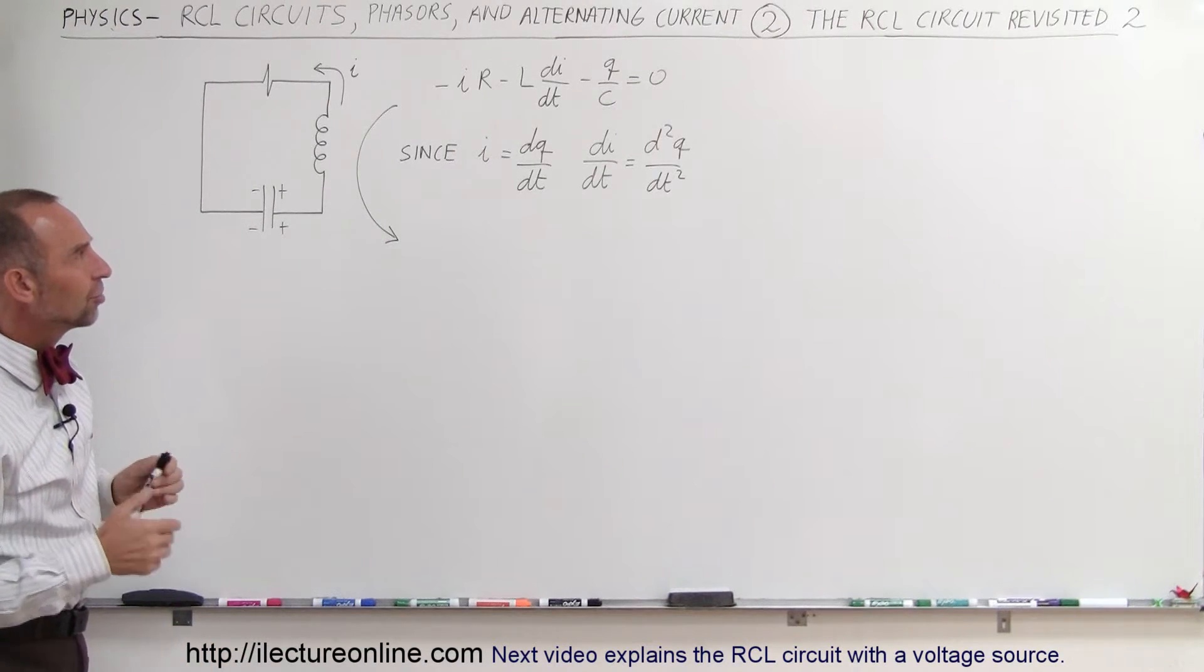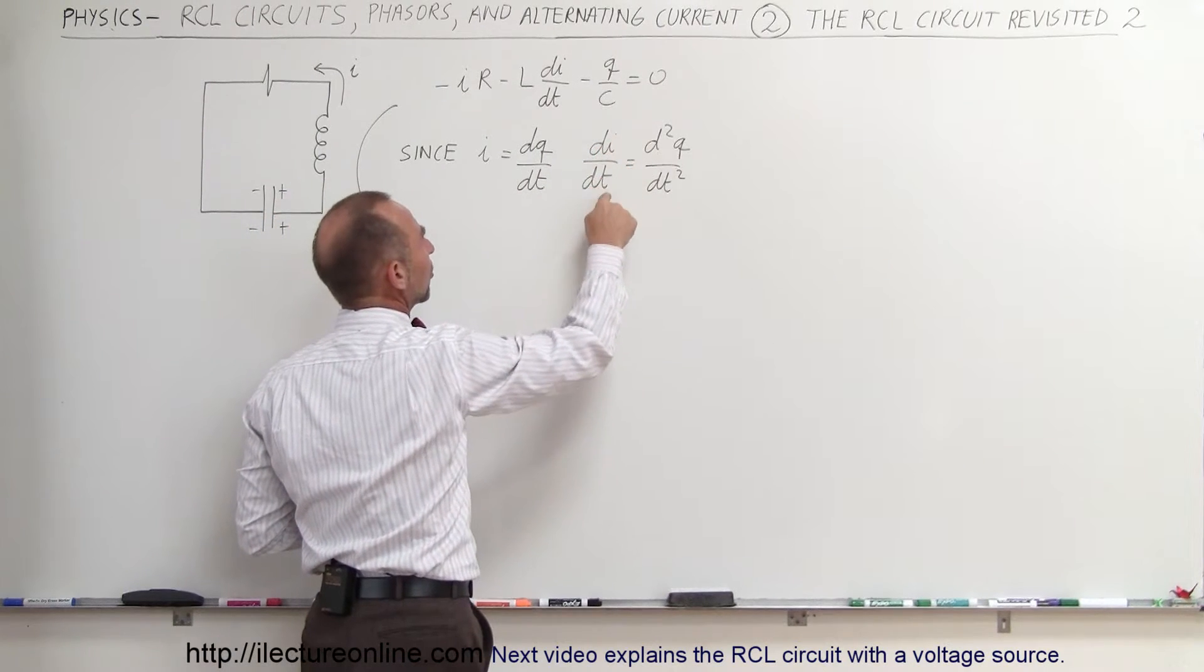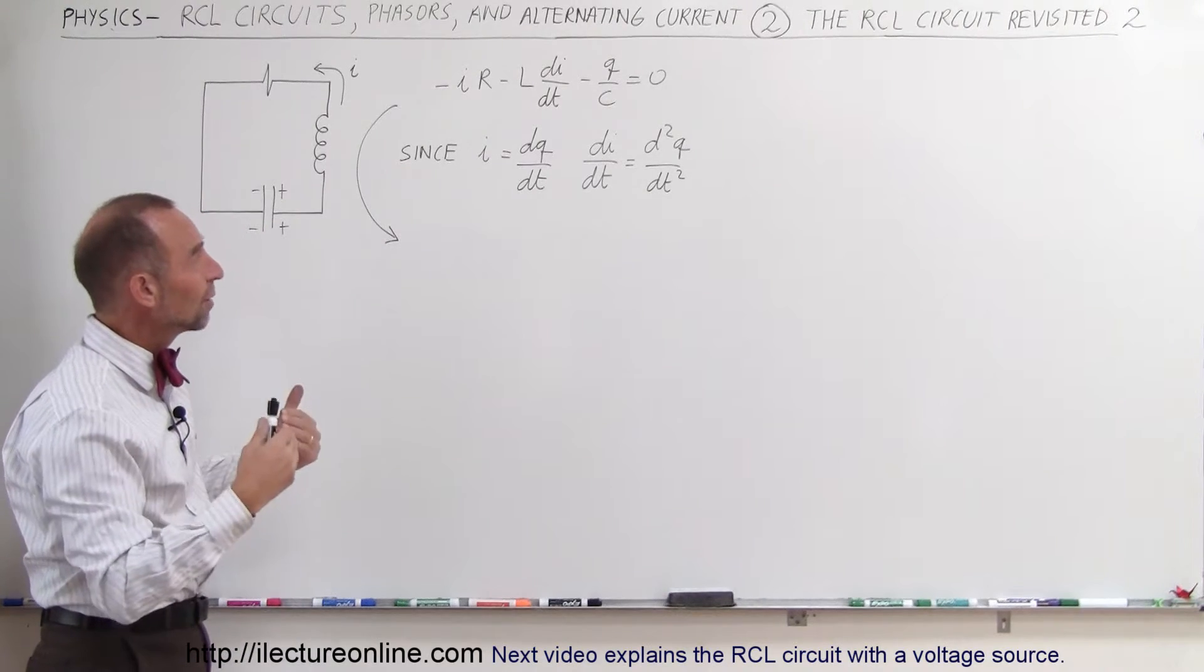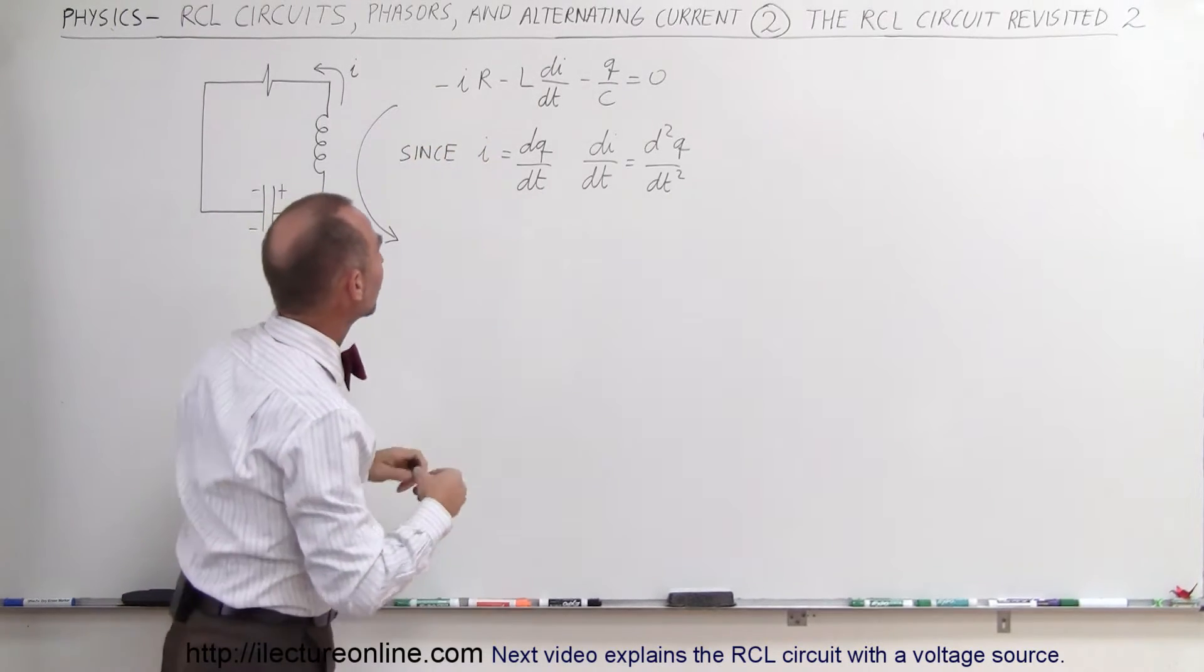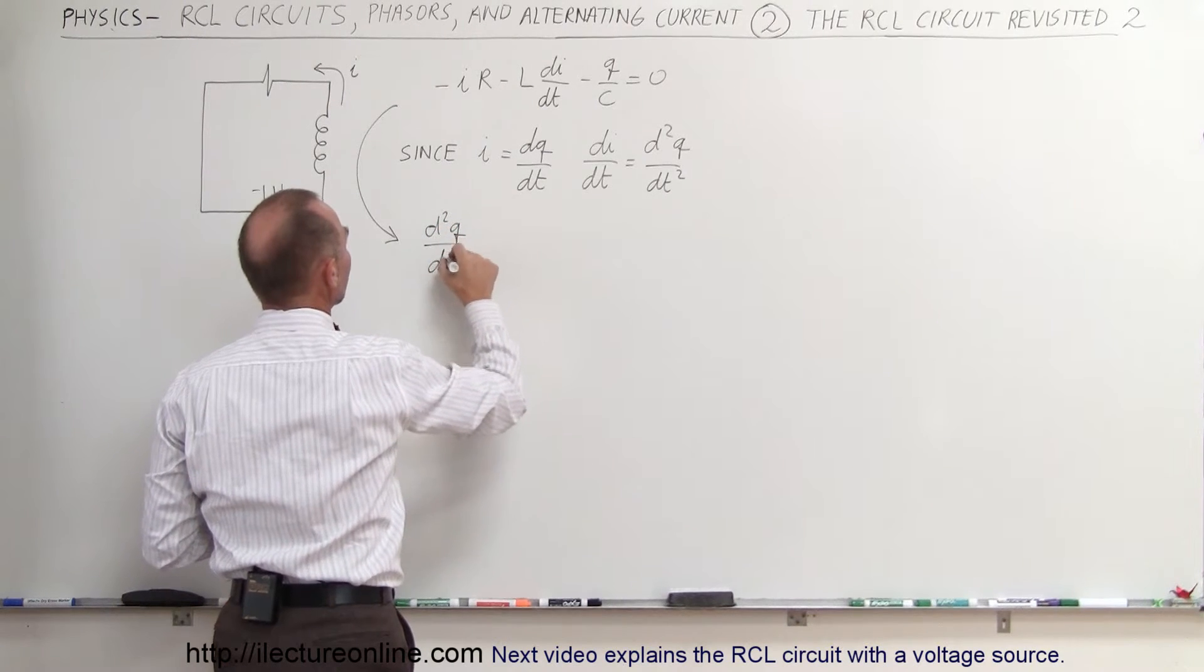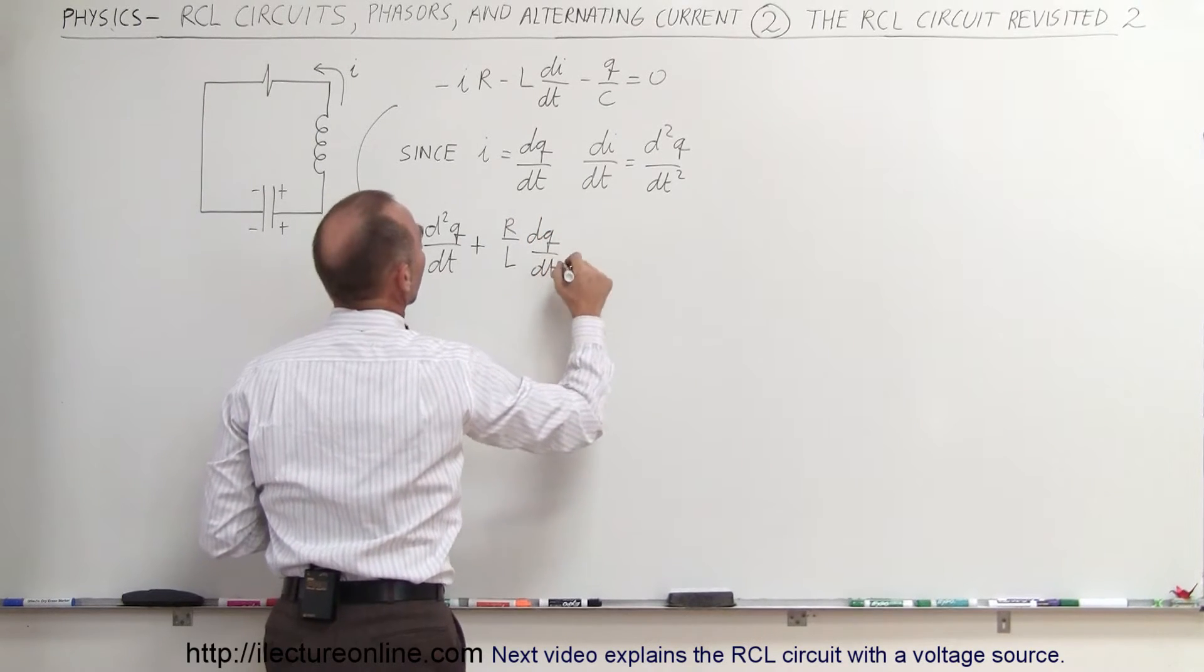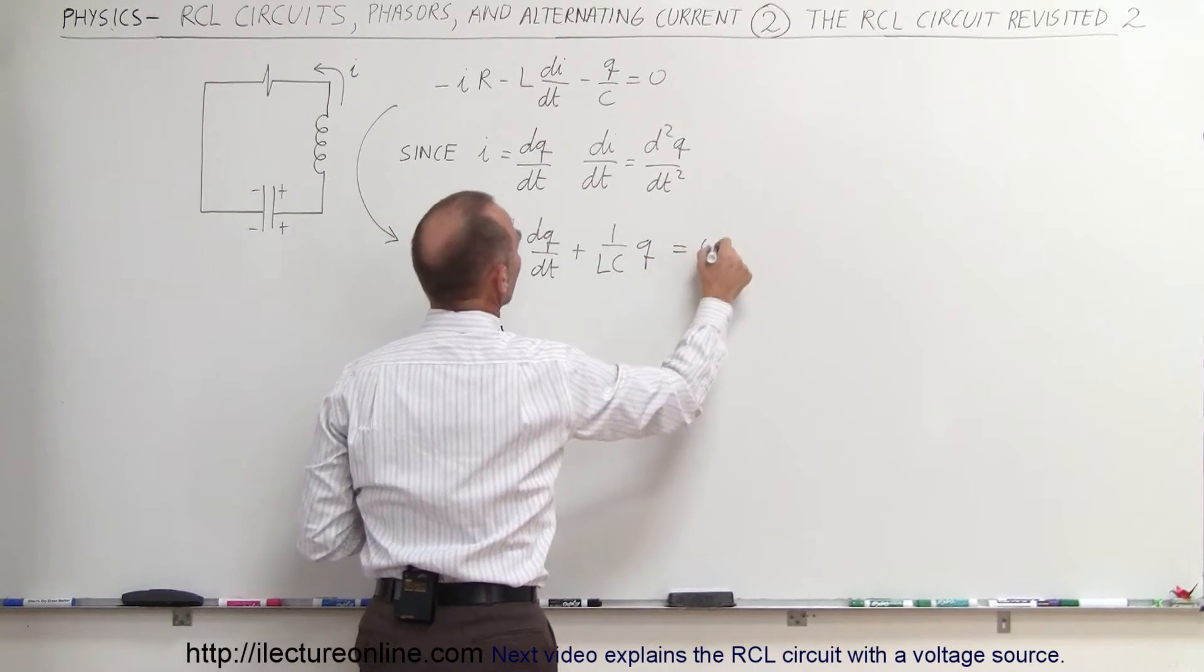If we understand that the current is simply dQ/dt, and therefore the derivative of the current with respect to time is the second derivative of charge with respect to time, and we replace that in our equation, and then we divide both sides by a negative number to get rid of the negatives, and then divide both sides by L, this equation becomes the second derivative of charge with respect to time, plus R over L times dQ/dt, plus 1 over LC times Q, and that adds up to zero.